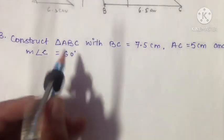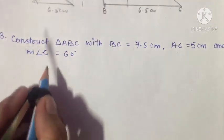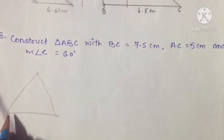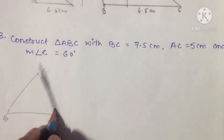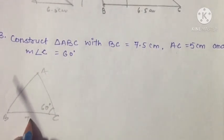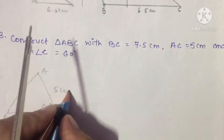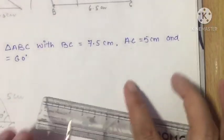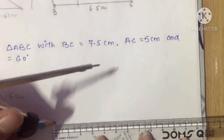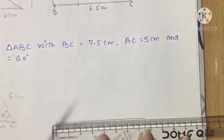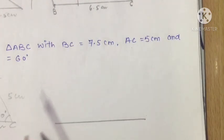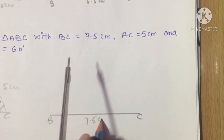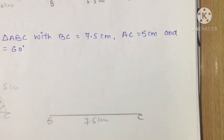Let's go with the last question, question number three. Construct triangle ABC where angle C is 60 degrees, BC is 7.5 cm, and AC should be 5 cm. This is the rough sketch. I will draw BC as 7.5 cm — between 7 and 8, that is 7.5. Name it BC.